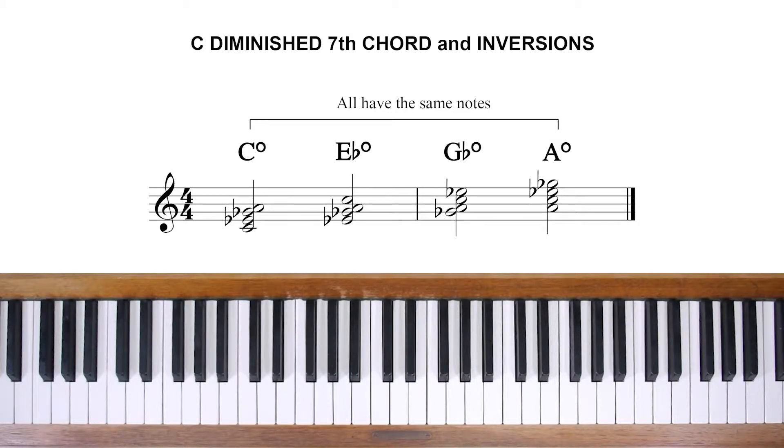First of all, review your knowledge of diminished seventh chords. Unlike most other chords, these are symmetrical in that every note is a minor third or one and a half tones away from the next. This means that when you invert the chord, it doesn't change shape, just becomes another diminished chord.